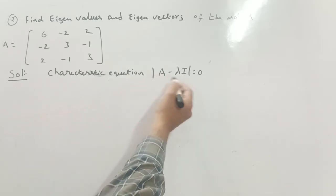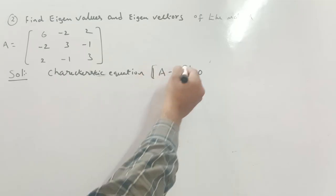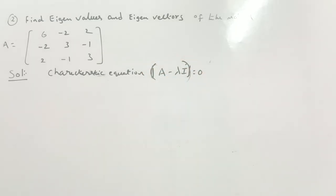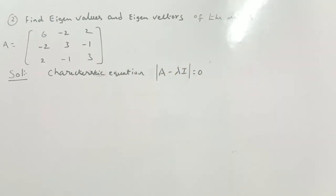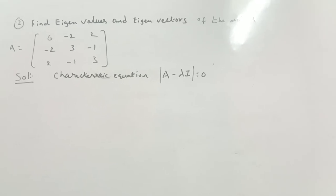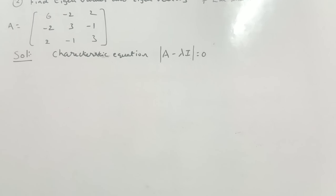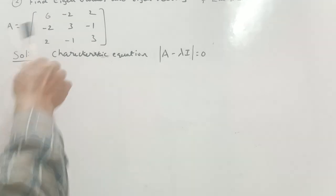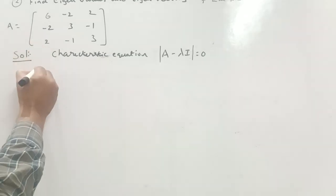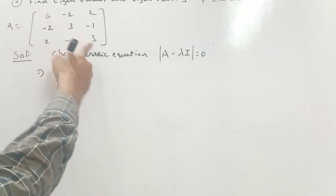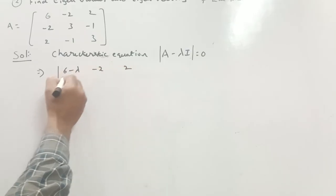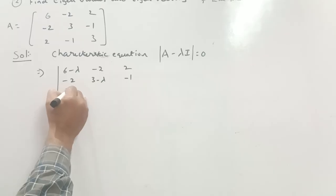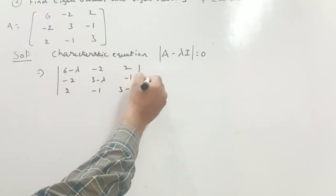Many students write the characteristic equation incorrectly — this is a determinant, not a matrix form. Whenever you write the characteristic equation, it must be in the mod (determinant) form. We subtract lambda from the diagonal of the given matrix. So we get: |6-λ, -2, 2; -2, 3-λ, -1; 2, -1, 3-λ| = 0.